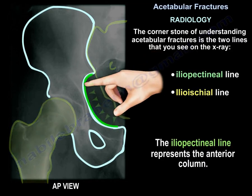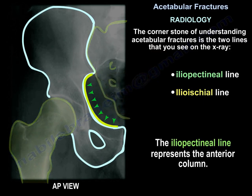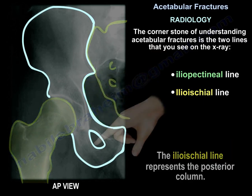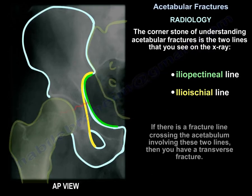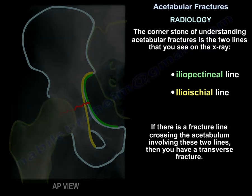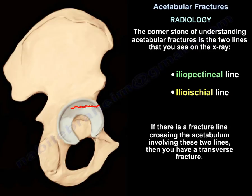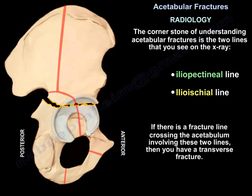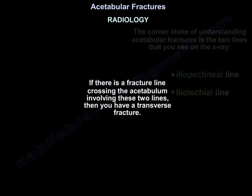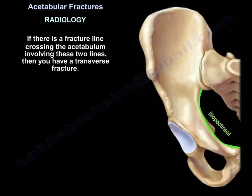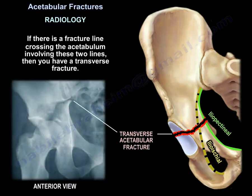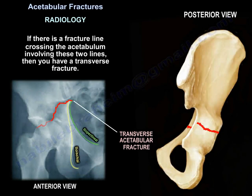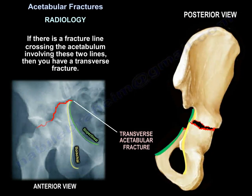The iliopectineal line represents the anterior column, and the ilioischial line represents the posterior column. If there is a fracture line crossing the acetabulum involving both lines, then you have a transverse fracture. You can see the fracture involving both the iliopectineal line and the ilioischial line — that is a transverse fracture. This is how a transverse fracture looks on x-ray.